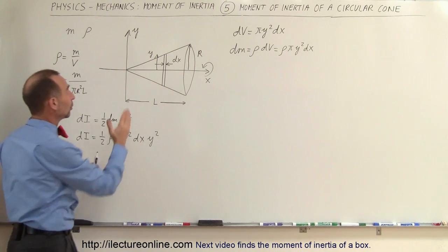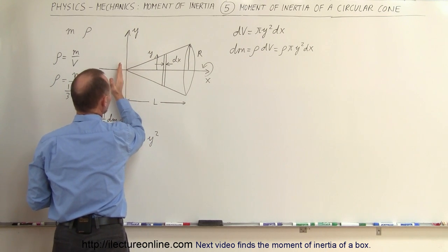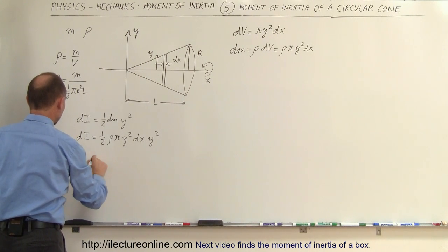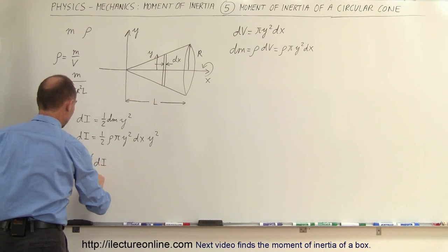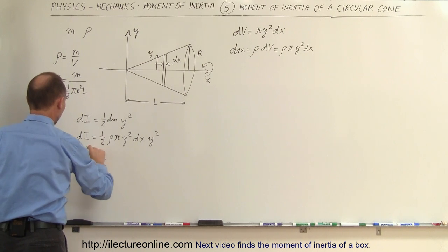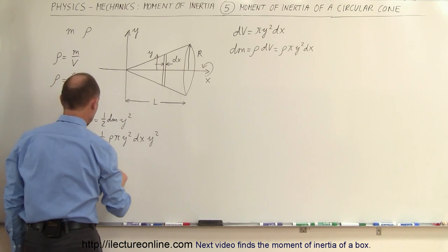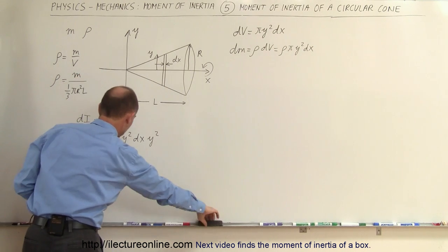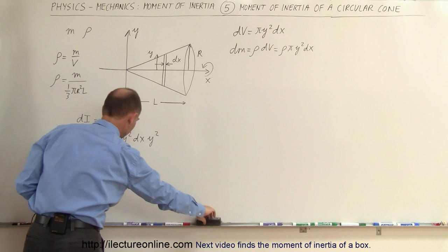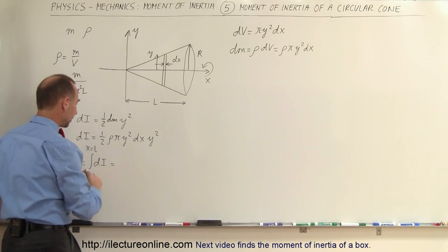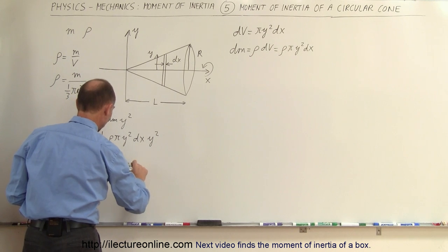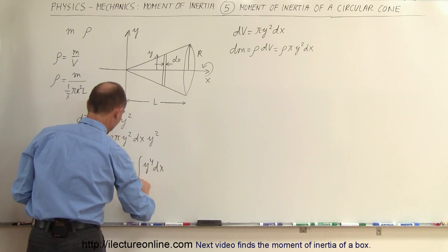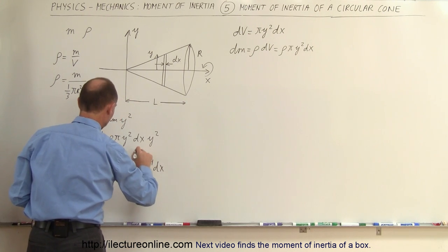To find the moment of inertia for the whole cone, we integrate from x equals zero to x equals L. So I equals the integral of all the dI's from x equals zero to x equals L, which gives us one-half density times pi times the integral of y to the fourth times dx, from x equals zero to x equals L.